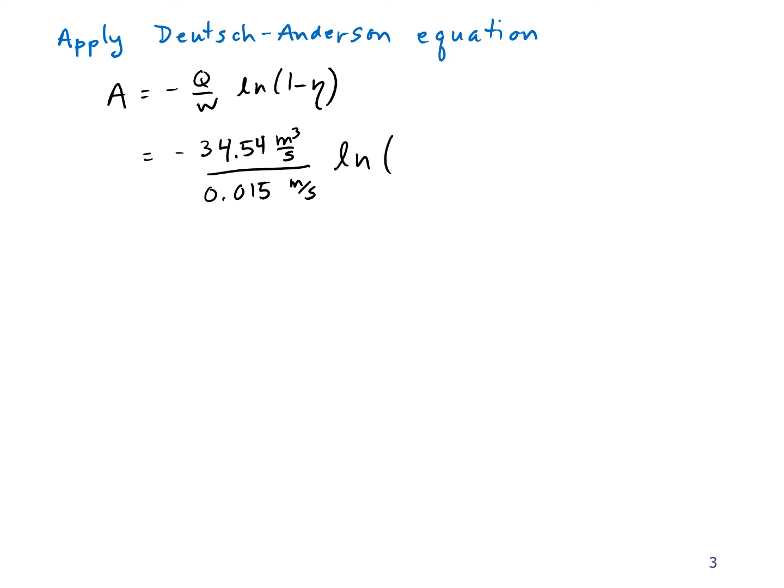So that's times the natural log of 1 minus the efficiency. We're seeking an efficiency of 99%, so I substitute that in. And when I solve for this, I get 10,600 square meters. So that's the total area, and if each of my plates is, let's say, 1,000 square meters, I would need at least 10 of them, so I'd need 11 of them.